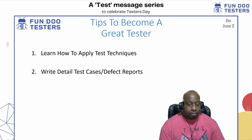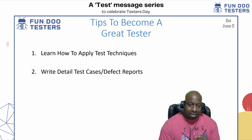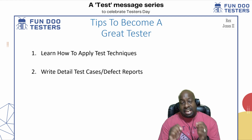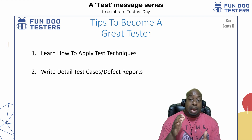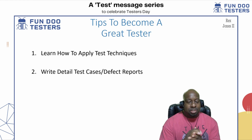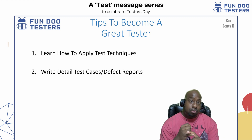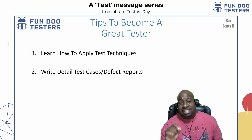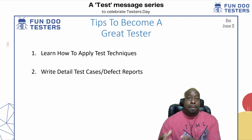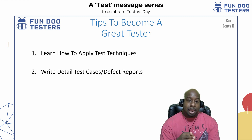Number two is to write detailed test cases and test reports. A test case is a set of steps that shows how to test an application under test, AUT. Normally, it includes a title, steps, and expected results. If the test case is detailed, then other people will not assume what to test, how to test, and what to expect.